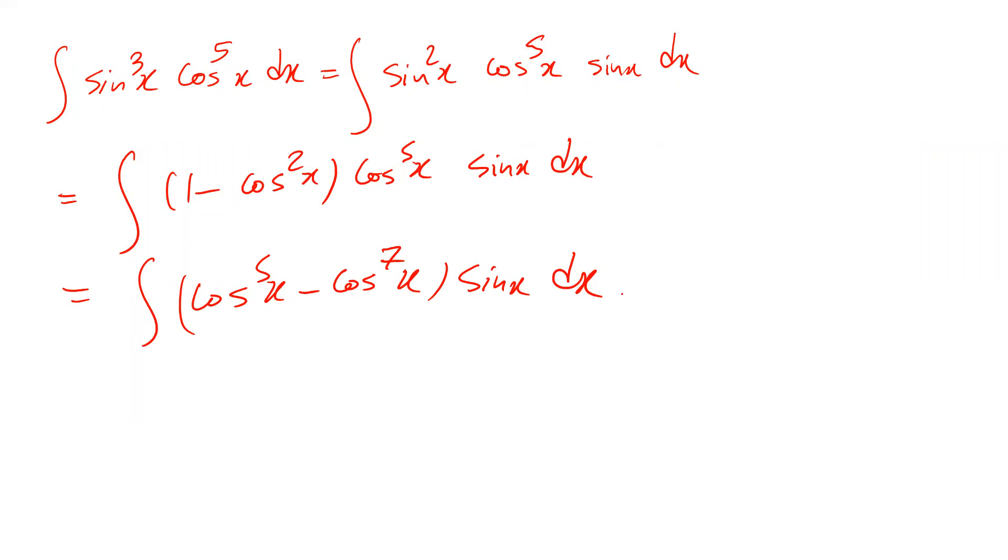So this integral now, you can solve it using the substitution rule. So if you define cosine x as u, and if you take the derivative from each side of this equation, you'll get minus sine x dx will be equal to du. So here all you need to do, you need to substitute this to the expression in the integral.